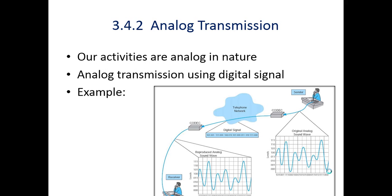Analog transmission: most of our day-to-day activities belong to the analog in nature. Analog transmission using digital signaling is also possible — examples include internet calls and video conferencing. In this case, analog data is transmitted using a digital signal. For example, a sender talking on a phone: the analog data is transferred further and there is a device called a CODEC which converts analog data into digital data and vice versa.